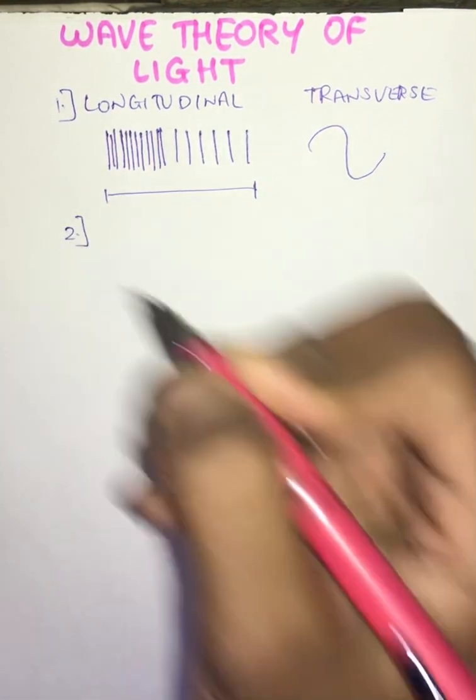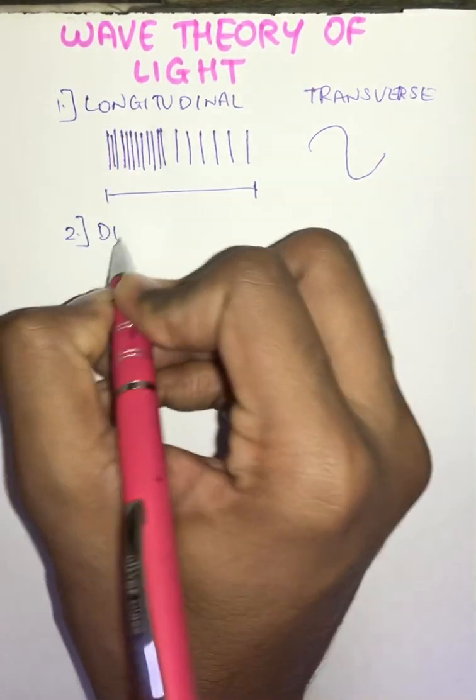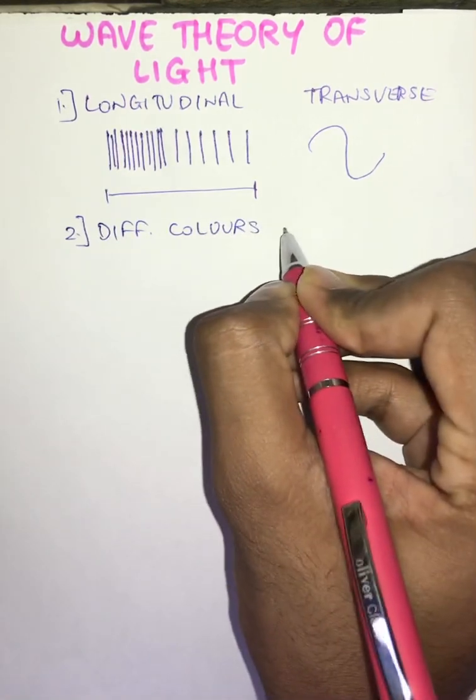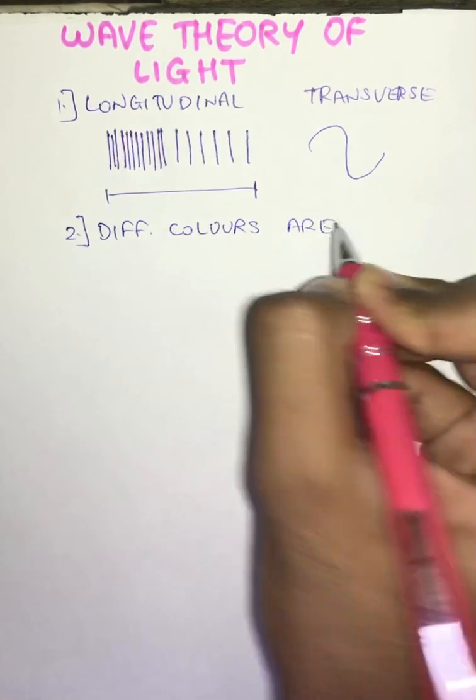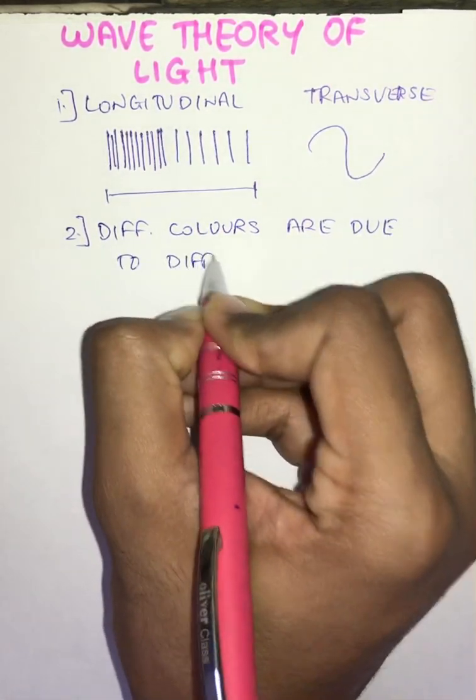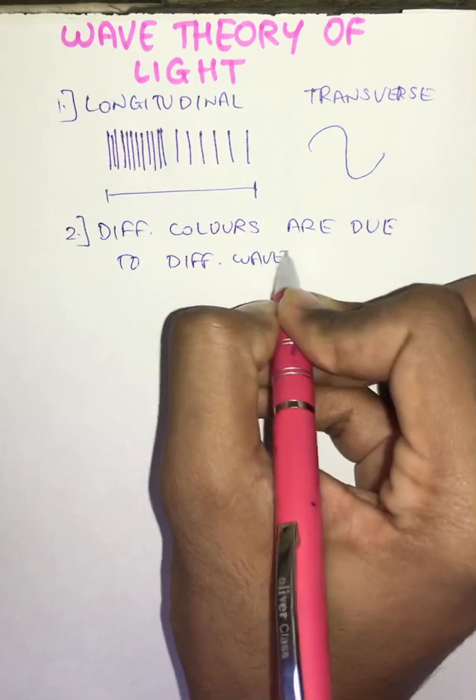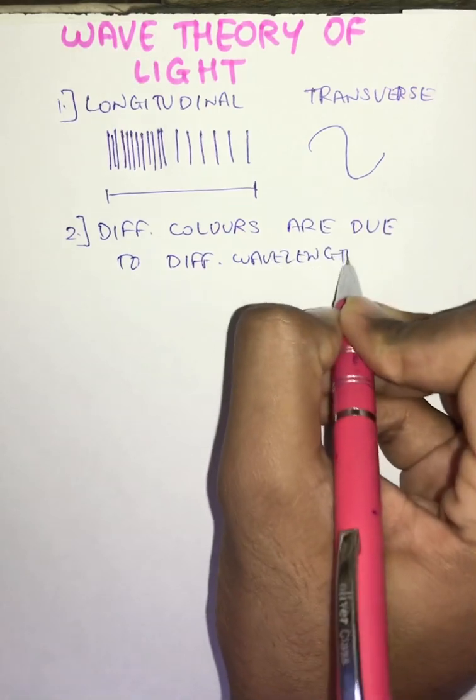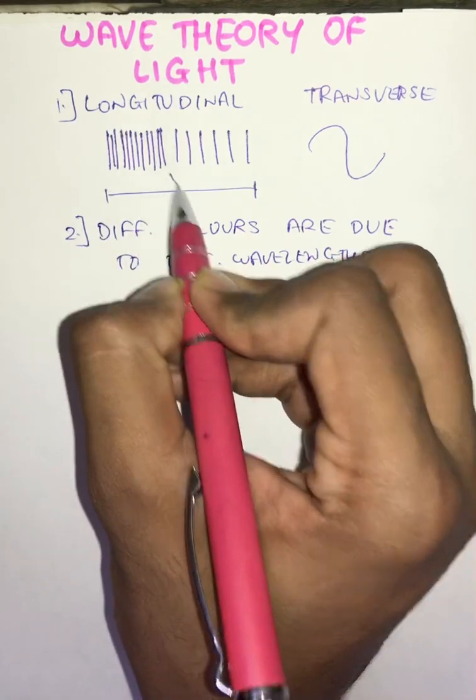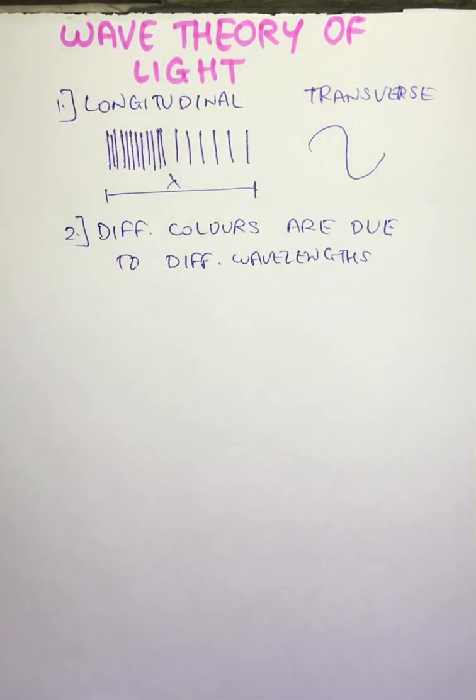It says that different colors of light are due to different wavelengths. So over here you can see that this is one longitudinal wave and it is signified by lambda. This longitudinal wave has its particular value given in angstroms.